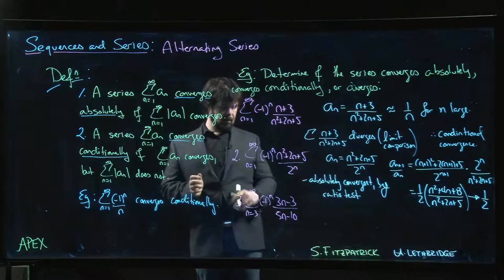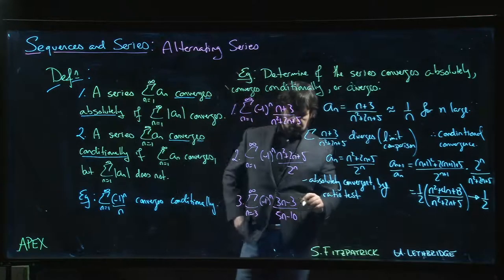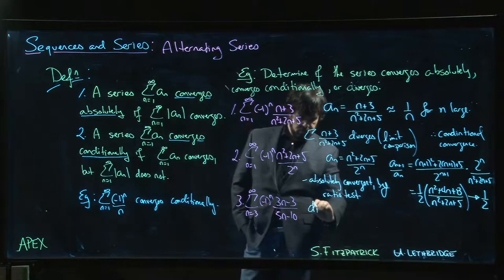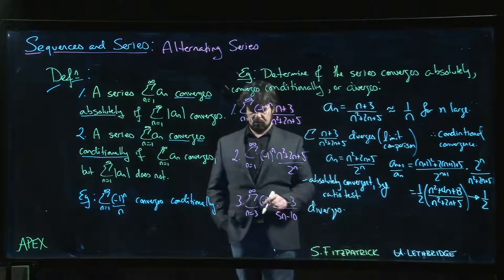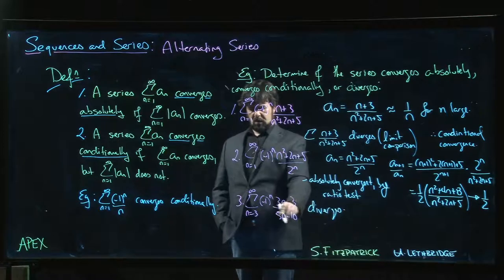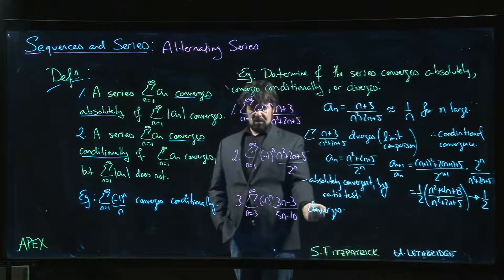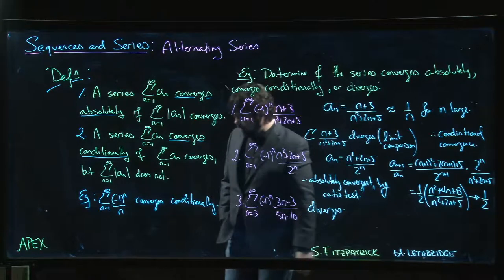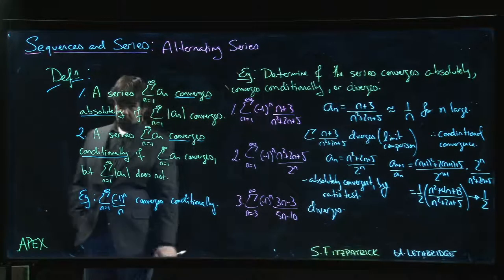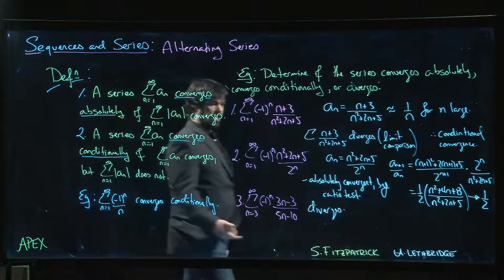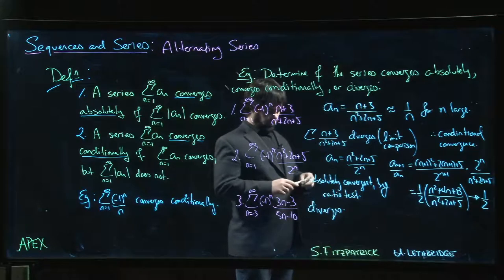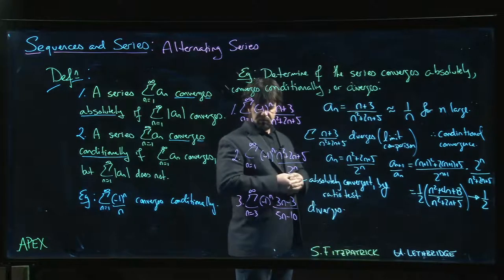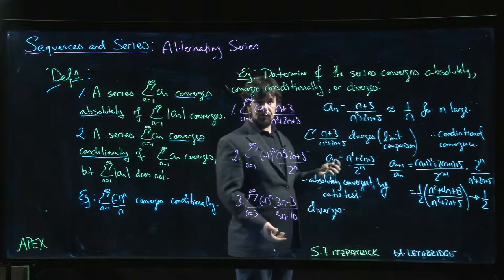Okay, the last one diverges. We don't have to do any work. Why does it diverge? Look at the terms here - as n goes to infinity, that's going to 3/5. So the limit doesn't go to zero. It fails the test for divergence. If a_n doesn't go to zero as n goes to infinity, we know it can't possibly converge absolutely or otherwise. This one just diverges.